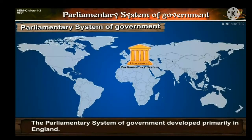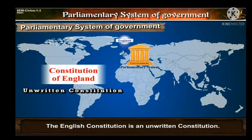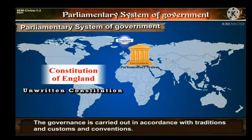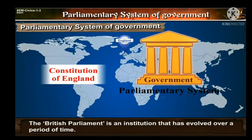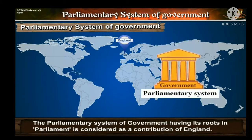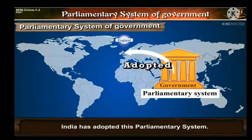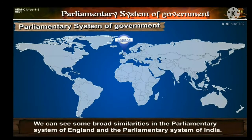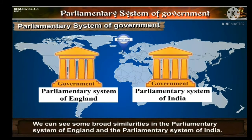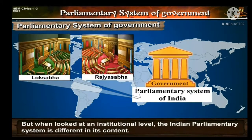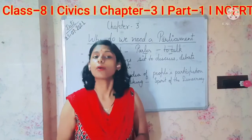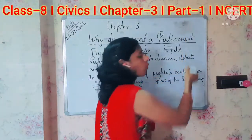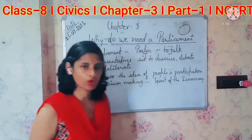The parliamentary system of government developed primarily in England. The English constitution is an unwritten constitution. The government is carried out in accordance with traditions, customs, and conventions. The British Parliament is an institution that has evolved over a period of time, and the parliamentary system having its roots in parliament is considered a contribution of England. India has developed this parliamentary system and we can see broad similarities, though at an institutional level the Indian parliamentary system differs in its context.